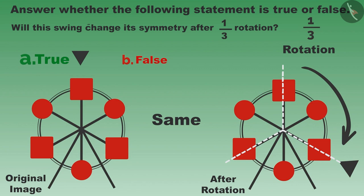It is not necessary that the objects with one-third rotational symmetry will remain the same after one-sixth rotation.